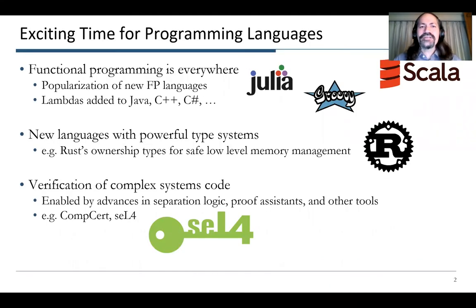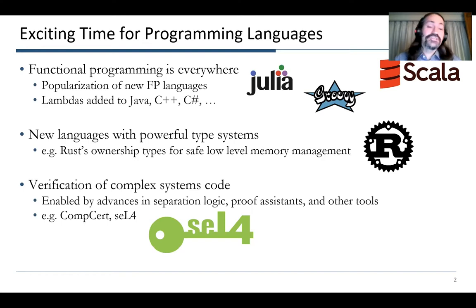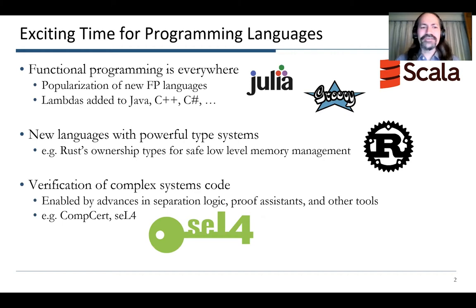This is an exciting time for programming languages. Functional programming is everywhere. We're seeing new languages, and lambdas and other constructs being added to existing languages like Java, C++, and C#. We're seeing new languages like Rust with powerful type systems that allow us to do safe, low-level memory management. We're seeing verification of complex systems code enabled by recent advances in separation logic, proof of systems, and other tools.